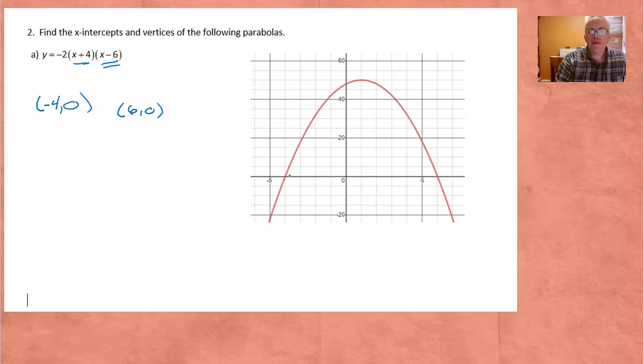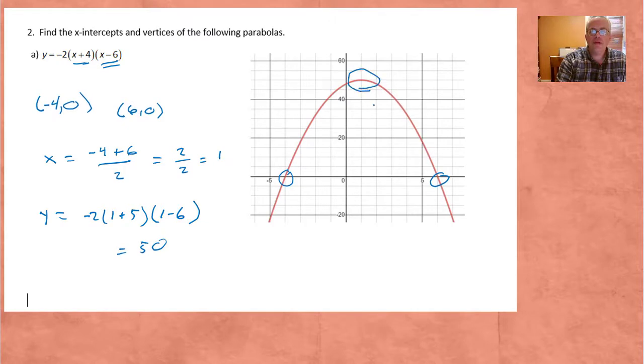Those are the x-intercepts and we see them here in the graph, negative 4 and positive 6. The vertex is halfway in between them. So that's what you get when you take the average of two numbers, you get a number that's exactly in the middle of them. So negative 4 plus 6 is 2, divided by 2 is 1. And then to find the y-coordinate, go back to the equation. Negative 2 times 1 plus 5 times 1 minus 6, and I get 50. And that's the point we see right here in the graph. x equals 1, y equals 50.